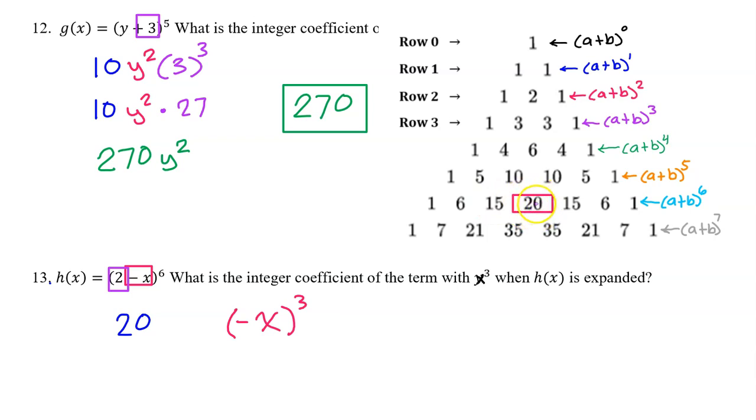This is the term that we are going to use. So we will need 2^3 in this term. Bring down the 20, 2^3 is 8. And when you raise a negative x to the third power, the negative stays.